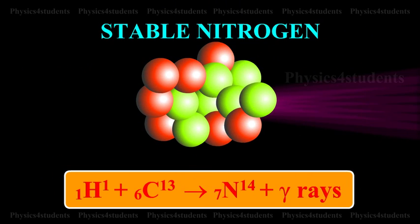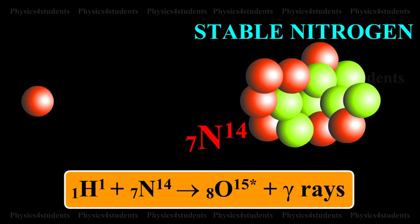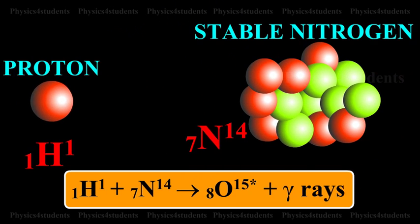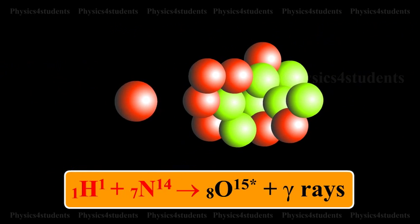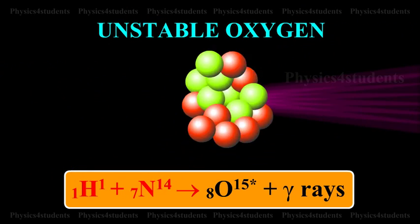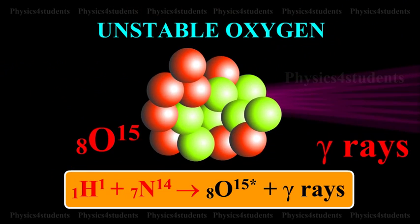This stable nitrogen combines with another proton, producing unstable oxygen, i.e. 8O15, with the release of gamma rays.